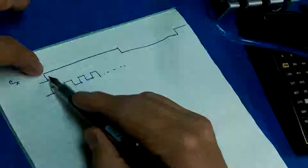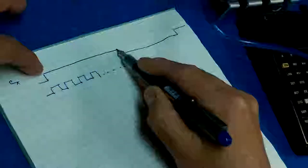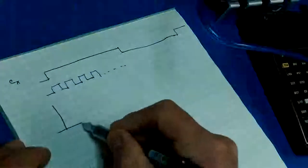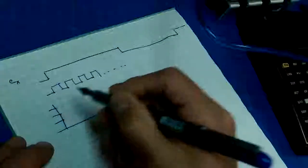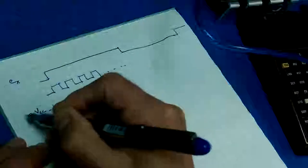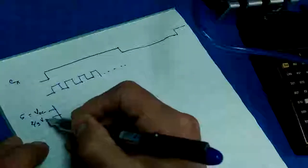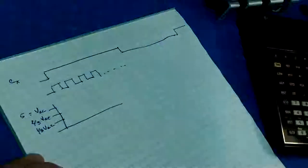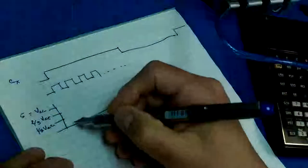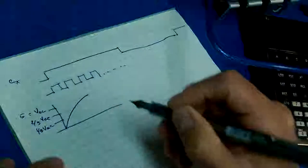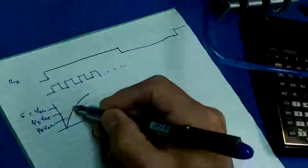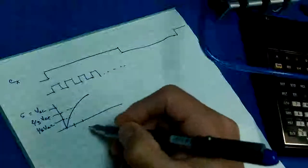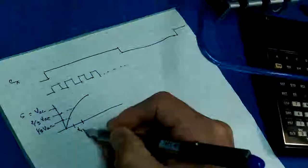When the 555 timer creates a high, that's when we're going to be doing our counting. We've got some voltages we're interested in: VCC is going to be 5 volts in our case, two-thirds of VCC, and one-third of VCC, and those are going to determine our timings. When we charge up a capacitor it kind of looks like this, and we're interested in the time between those two voltage thresholds — we'll call this our high time.